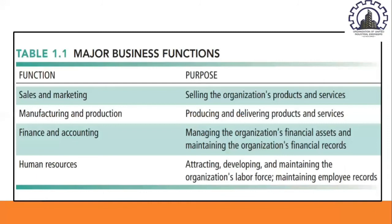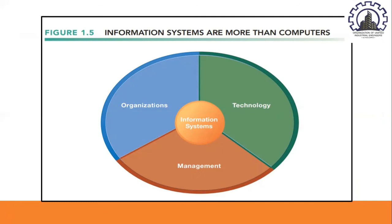As shown in table 1.1, the major business functions include sales and marketing, manufacturing and production, finance and accounting, and human resources. Management's job is to make sense of the many situations faced by the organization, make decisions, and formulate action plans to solve organizational problems. Managers perceive business challenges in the environment, set the organizational strategy for responding to those challenges, and allocate human and financial resources to coordinate the work and achieve success.